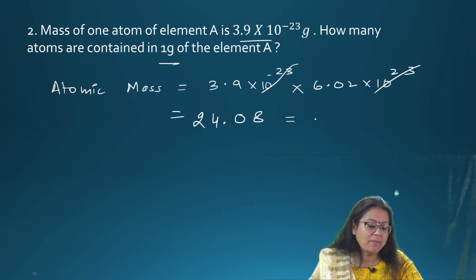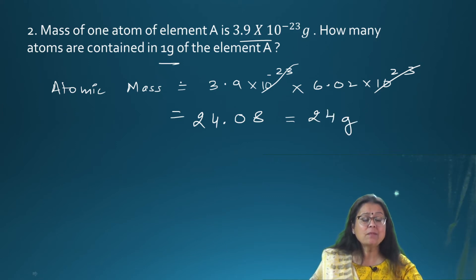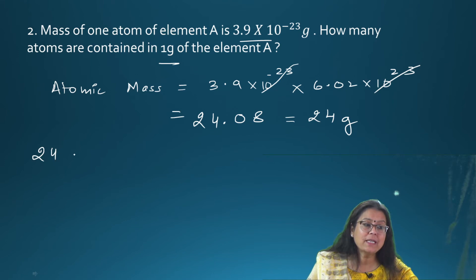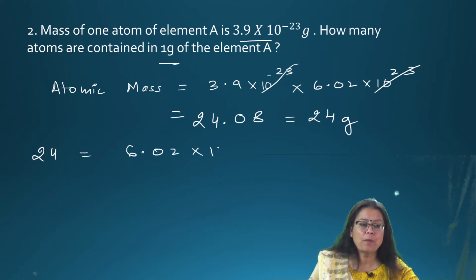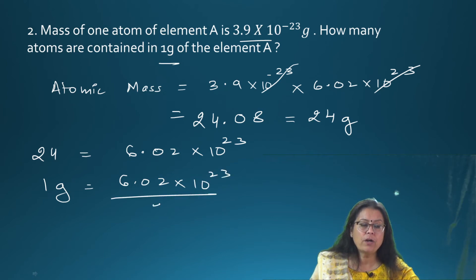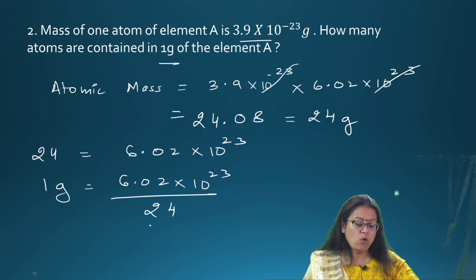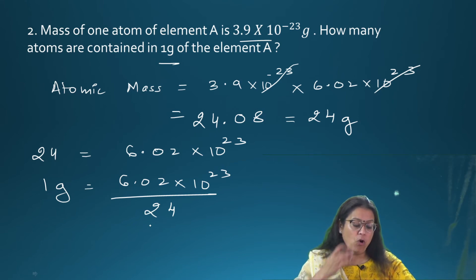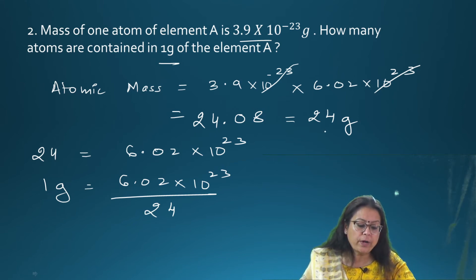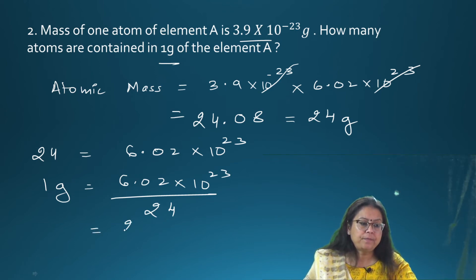Now, 24 grams contains Avogadro's number of atoms, i.e., 6.02 × 10²³ atoms. So 1 gram contains 6.02 × 10²³ divided by 24, which equals 2.5 × 10²² atoms. Very simple.